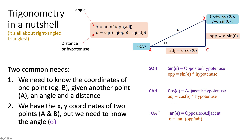TOA in the SOHCAHTOA memory aid is tan equals opposite over adjacent. So tan of the angle equals the length of the opposite side divided by the length of the adjacent side. We can rearrange this — we can get the arctan or inverse tan and use that to solve for the angle. Arctan of the opposite over the adjacent gives us the actual angle. We use this inverse tan or arctan function when we have both points and know the length of these two sides but need to solve for the angle.